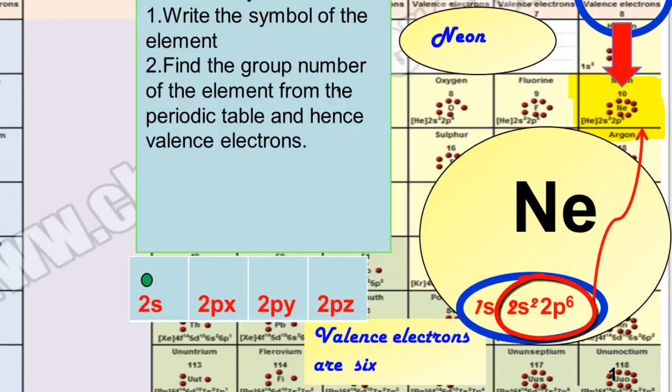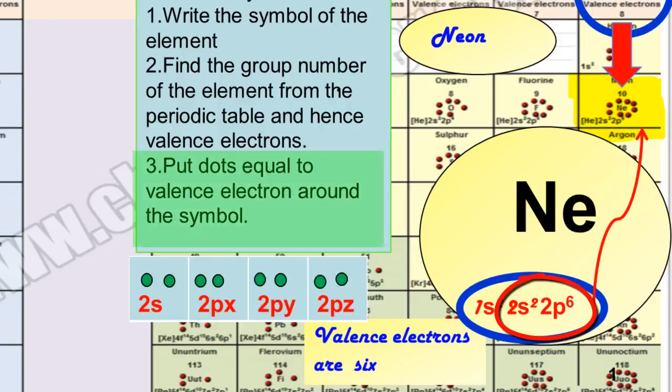These 8 electrons are present as 4 pairs in the electronic configuration of the neon. So, you are going to place 4 pairs of electrons as 4 pairs of dots in the Lewis dot symbol of neon.